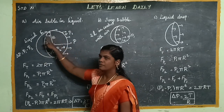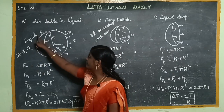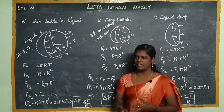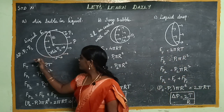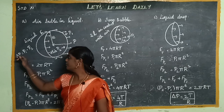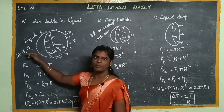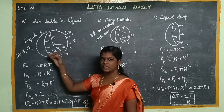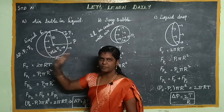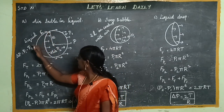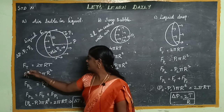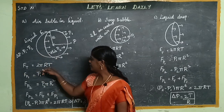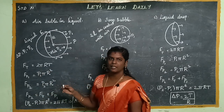If you apply pressure on the surface, you will have a force due to surface tension. So the change in pressure is outside minus inside, that is P1 minus P2. The surface tension force is circumference into tension — that is 2πR into T, where R is the radius of the air bubble.